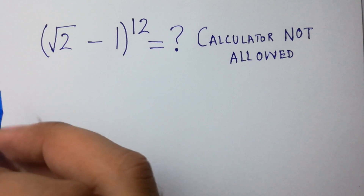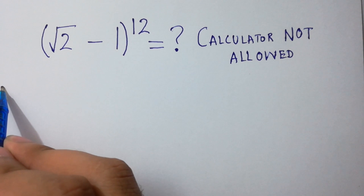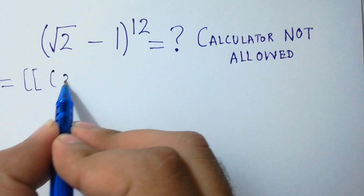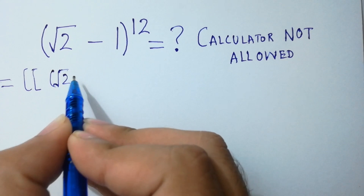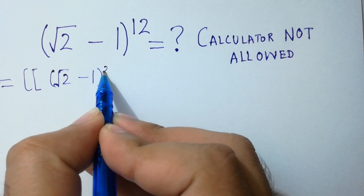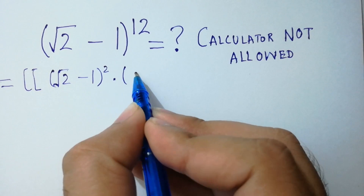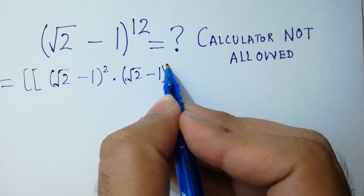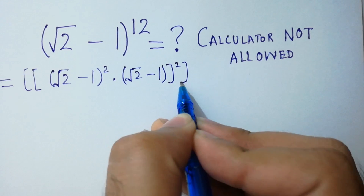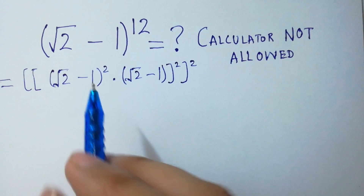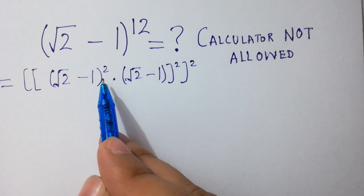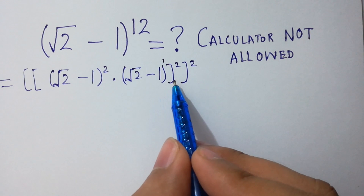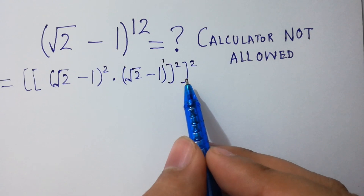It will be equal to square root of 2 minus 1 squared, times square root of 2 minus 1 squared — because base is the same, we add powers: this has power 2 and this has power 1, so 2 plus 1 equals 3, then 3 times 2 equals 6, and 6 times 2 equals 12. Got it?